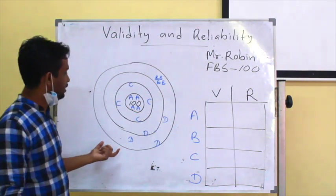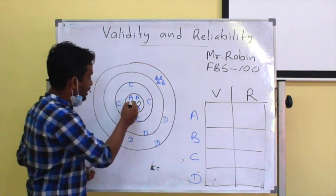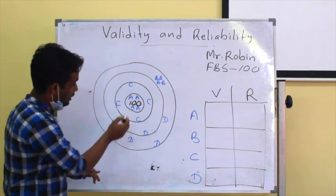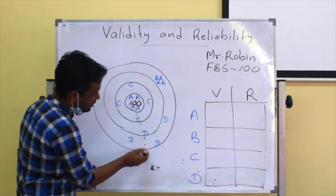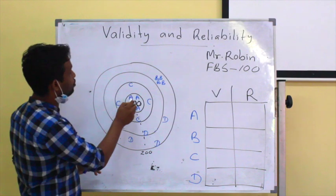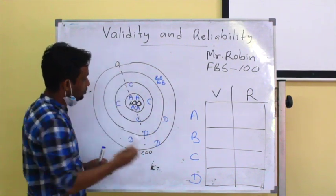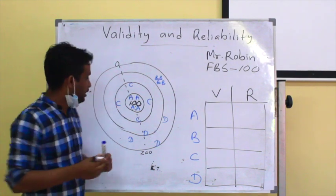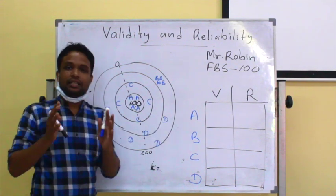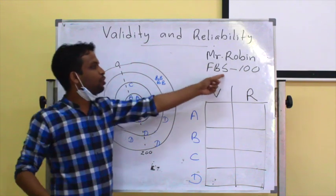You can see Mr. Robin's blood sugar level in this table. The exact blood sugar level is 100. Towards one side the blood sugar will be 200, and towards the other side it will be 0. Now look at screening test A — it has provided almost similar values to Mr. Robin's blood sugar.